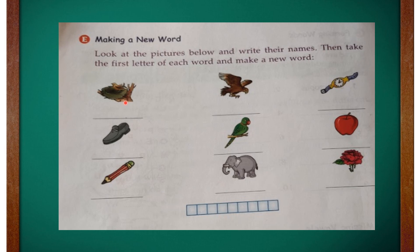What is this? Yes, this is a nest — N-E-S-T, nest. Moving on to the next picture, what is this? Yes, this is an eagle — E-A-G-L-E, eagle. Okay, so the next picture — you all already know — this is a watch, W-A-T-C-H, watch.